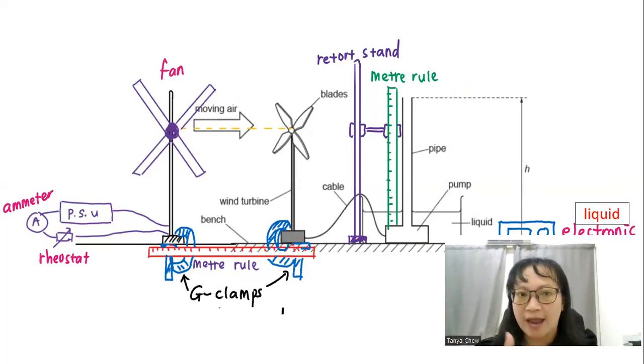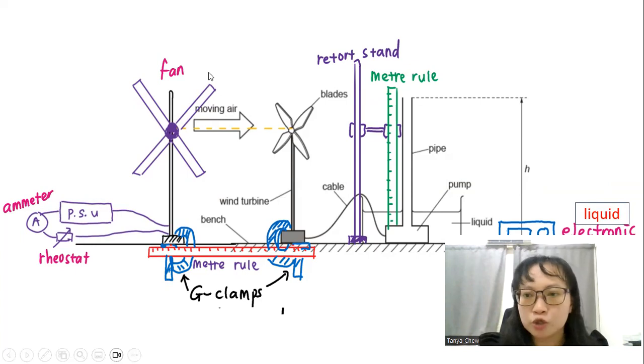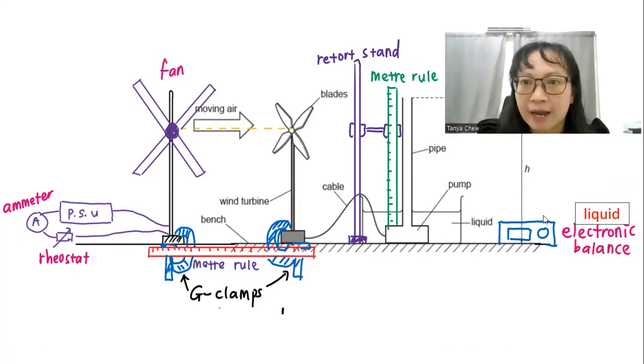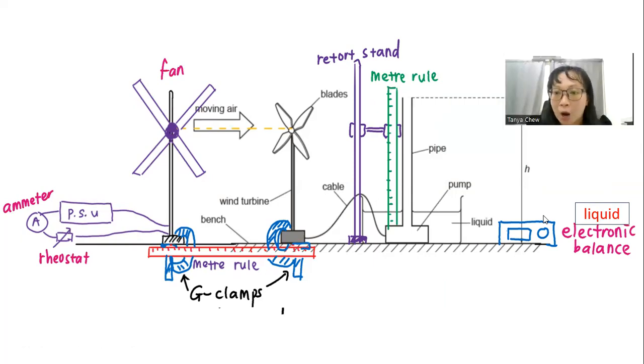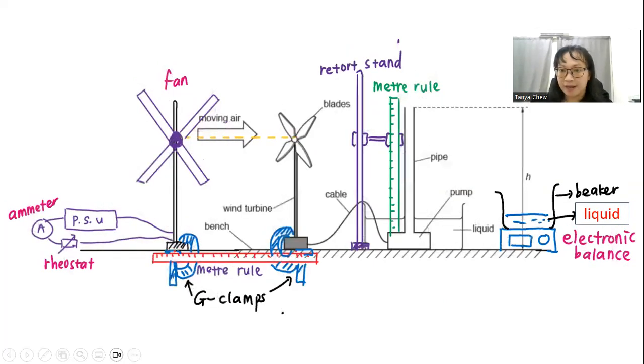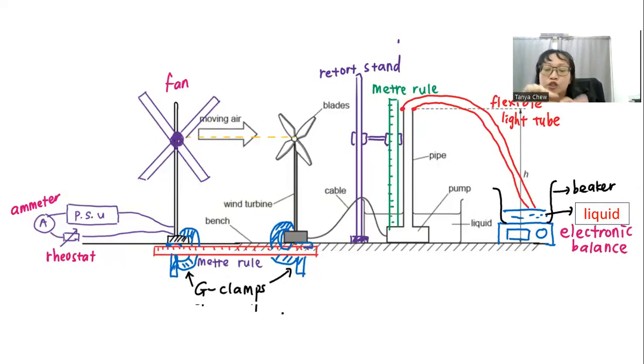And when I clamp it, remember, we are investigating between F and Q. What is Q again? Rate of mass, mass of the liquid that flows. So to measure the mass of the liquid that flows, I need an electronic balance. The function of an electronic balance is to measure our mass. So this is my electronic balance. And I put a beaker there to fill in the liquid. But how can the liquid flow into the beaker if I don't have a flexible light tube to connect it to the beaker? From the pipe, I connected it to the beaker so that my liquid could be pumped up and flow smoothly through the light tube to the beaker. And I can measure the mass of the liquid after that.